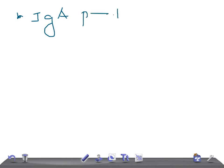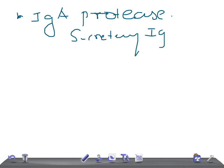The next virulence factor is IgA protease. Streptococcus pneumoniae produces an IgA protease, and this IgA protease inactivates secretory IgA antibodies — remember this, it's very important.